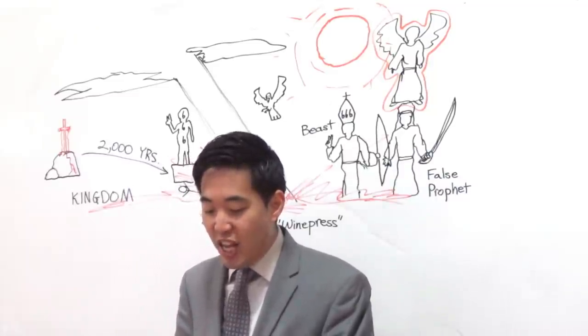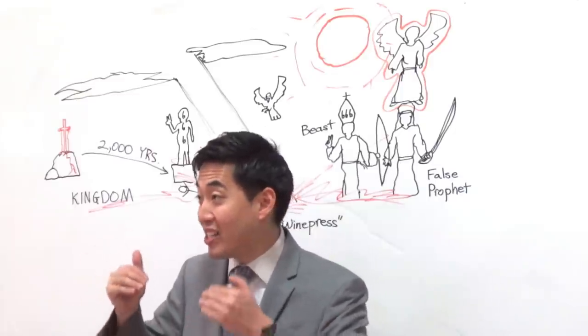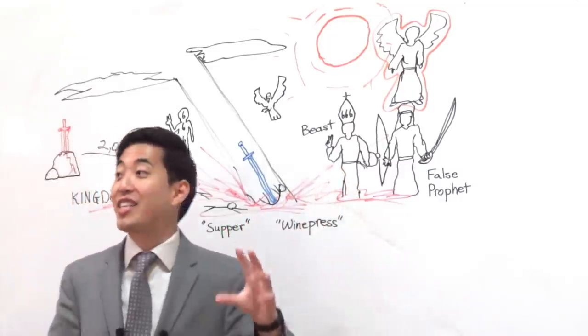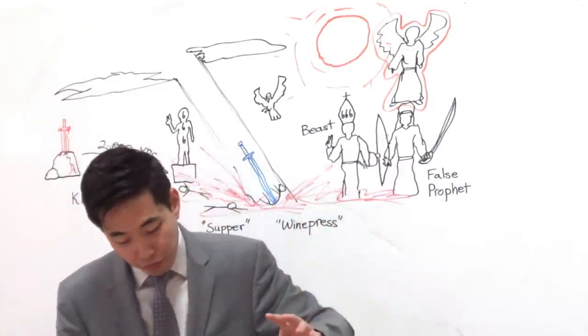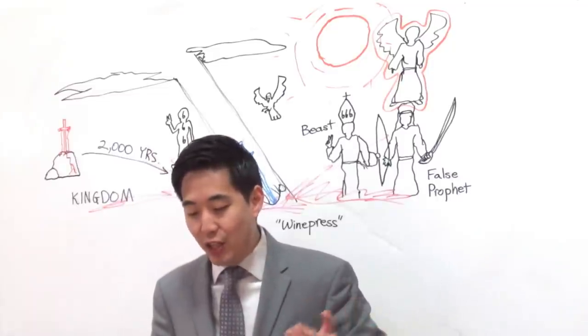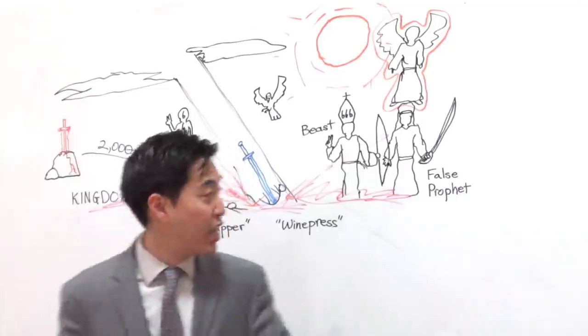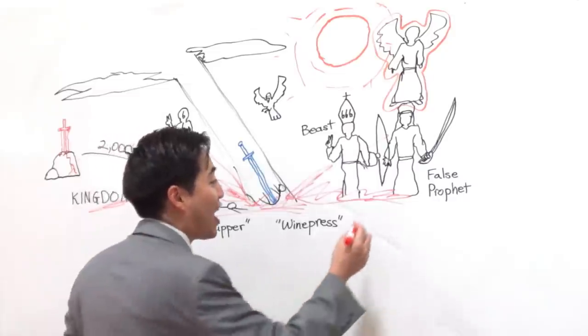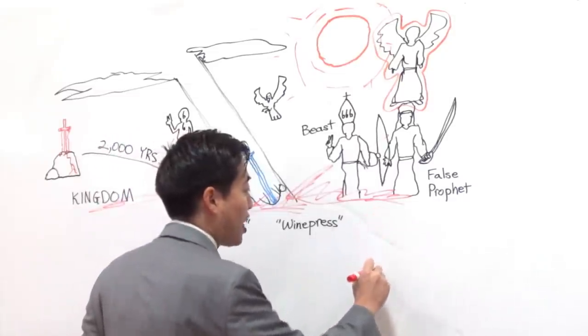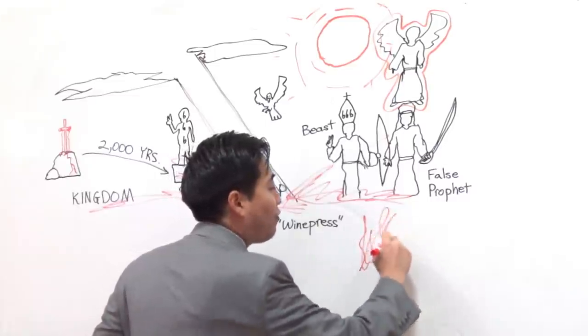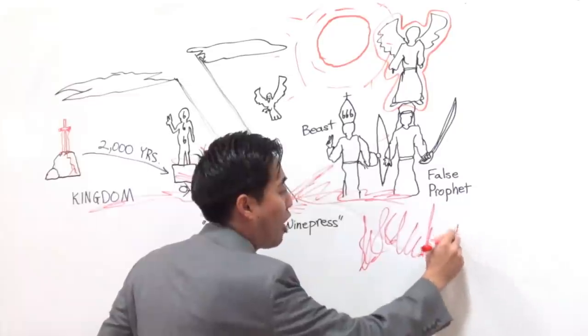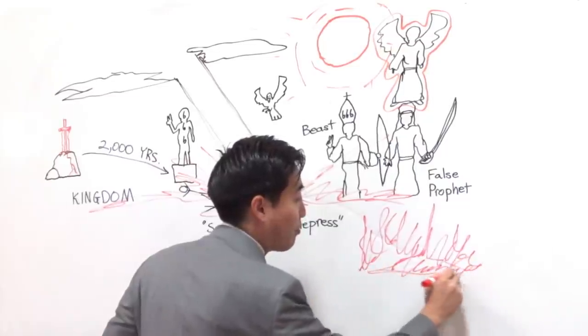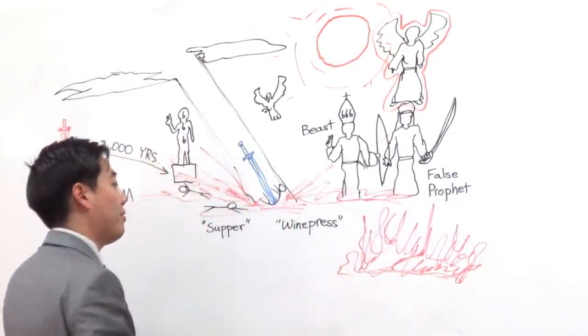The middle of verse 20. These both were cast alive. Now look at that. God does not kill them. So either they survive because they're powerful or because God's saving them for last. These both were cast alive into a lake of fire burning with brimstone. So they're cast alive. Alive. They're not eternally annihilated. Notice that they're alive in the lake of fire.